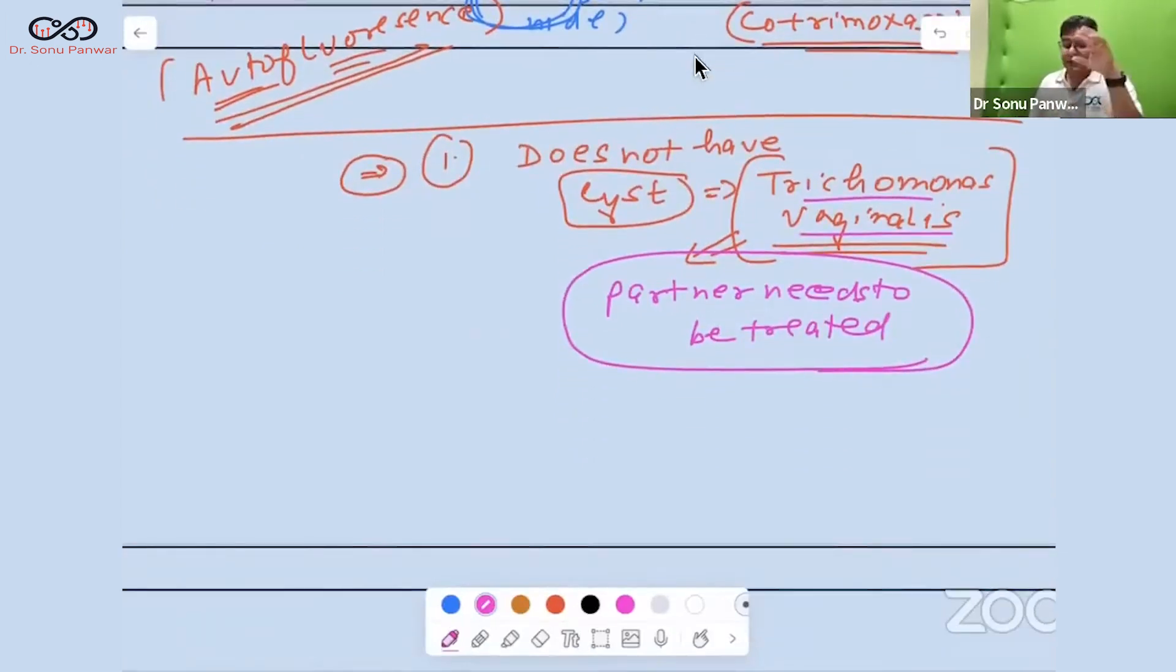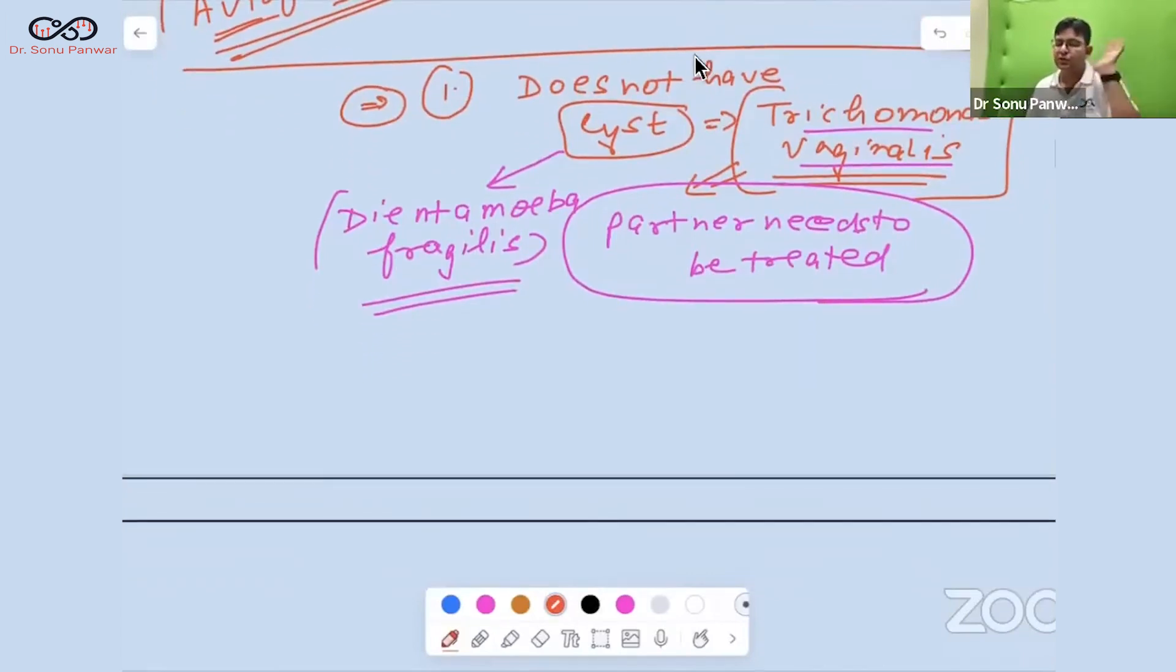If they ask the Trichomonas vaginalis, everybody knows. Which other is there which does not have a cyst? So this also you should know if you are attending this session. The Dientamoeba fragilis. This might be plus one of yours from this particular session. Other than Trichomonas vaginalis which does not have a cystic state, the answer is Dientamoeba fragilis.